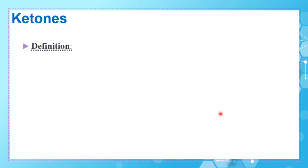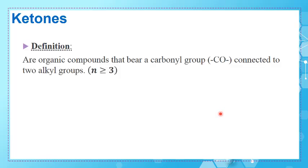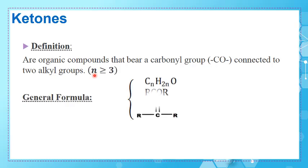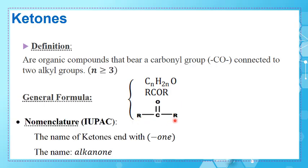Now let's move to ketones. By definition, ketones are organic compounds that also bear a carbonyl group, but it must be connected to two alkyl groups. Ketones cannot have fewer than three carbon atoms. Their general formula is CₙH₂ₙO — the same as aldehydes — but the carbonyl group CO is inserted between two alkyl groups, one on each side.